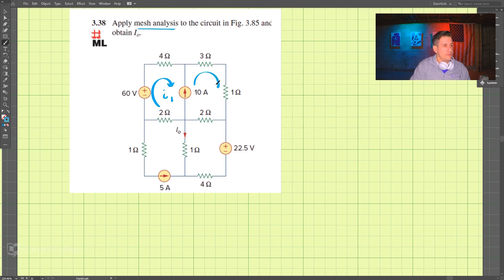We'll have I2, then I3. I'm drawing all of mine clockwise, and I4. When we do mesh analysis, we do KVL, so to do KVL...